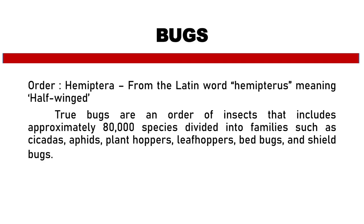Hemiptera — order Hemiptera — from the Latin word 'hemipterus' meaning 'half-winged.' True bugs are an order of insects that includes approximately 80,000 species divided into families such as cicadas, aphids, plant hoppers, and leaf hoppers.